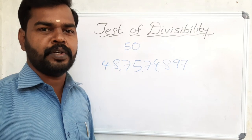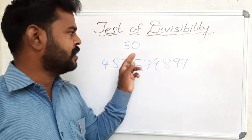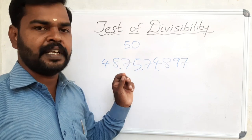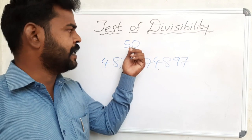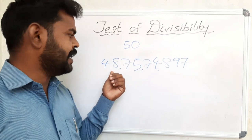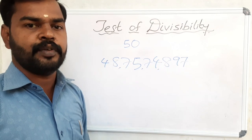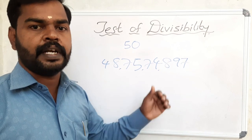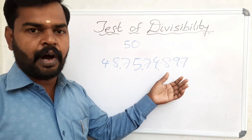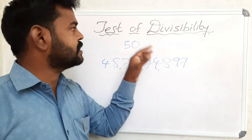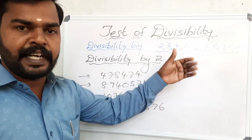Hi students, today I am going to explain one topic: test of divisibility. For example, is 50 divisible by 2? 50 divided by 2 is 25, we can do that easily. But what about 48 crore 75 lakh 74,897 — is this divisible by 8, 9, or 10? It would take a lot of time. So one simple method is to check divisibility without actual division — that is called the test of divisibility.